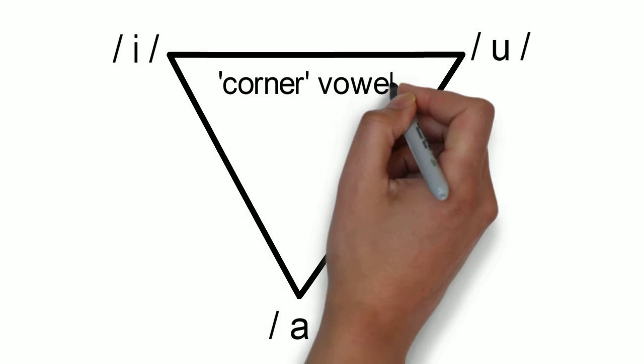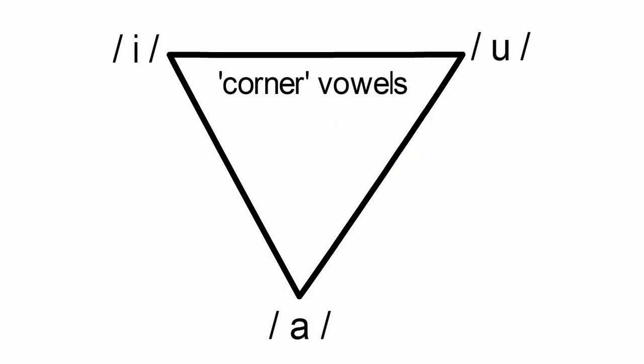These vowels sit at three corners, marking the most extreme edges of where someone will position their tongue. When plotted, this looks like a triangle.